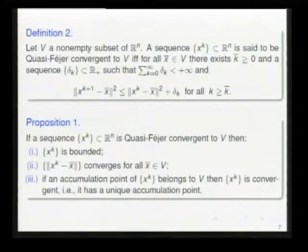The first proposition is a well-known consequence of quasi-Fejer convergence. Here we obtain the boundedness of the sequence and the convergence of the sequence. In Euclidean space, if an accumulation point of x_k belongs to the set V, then we have the convergence of the whole sequence.